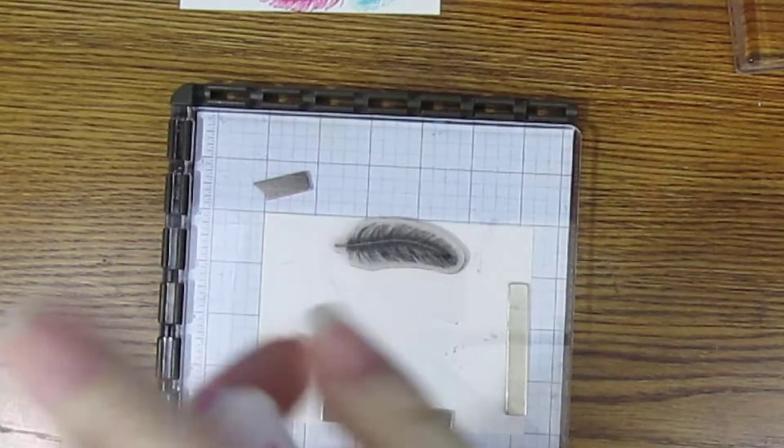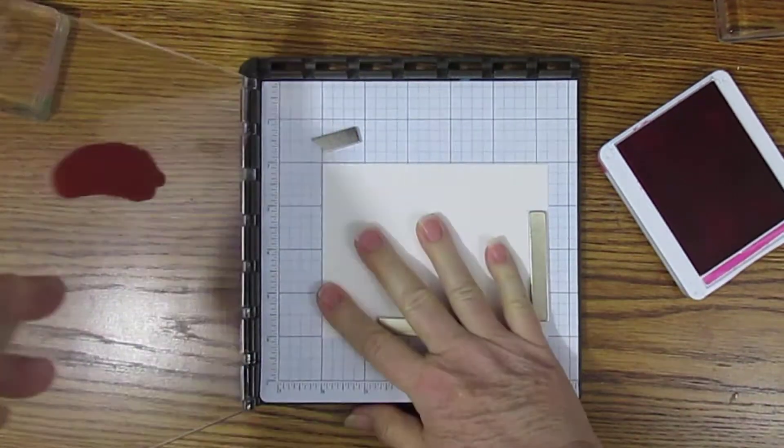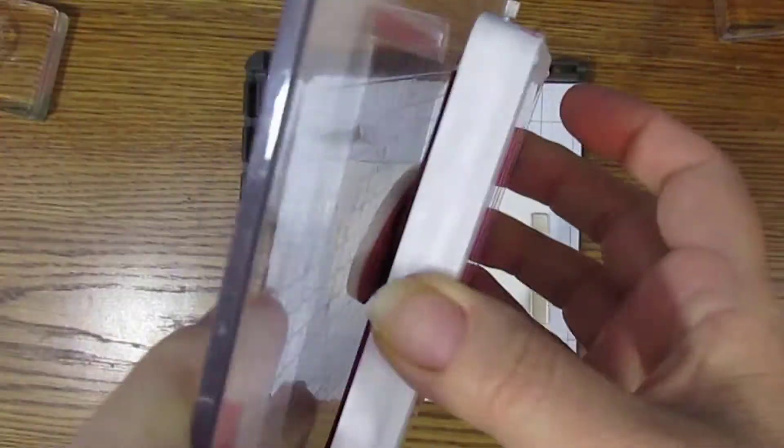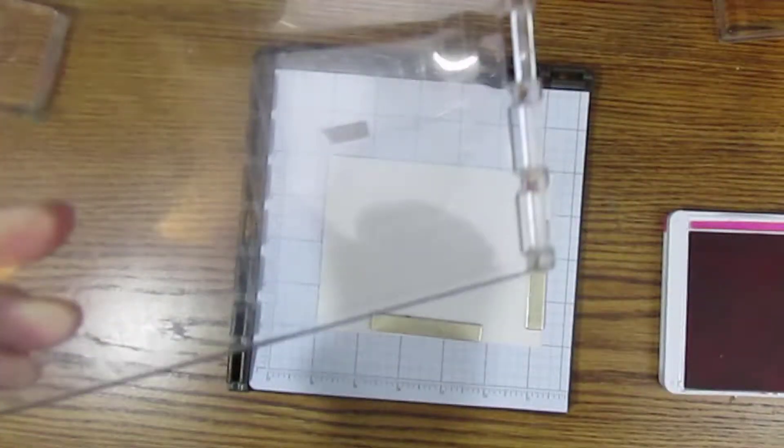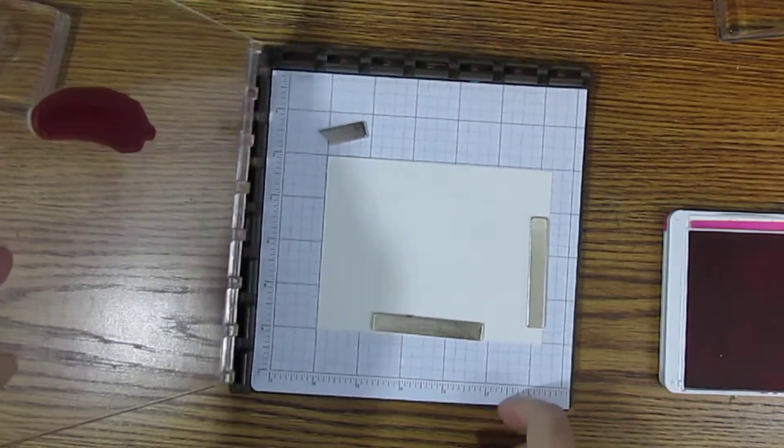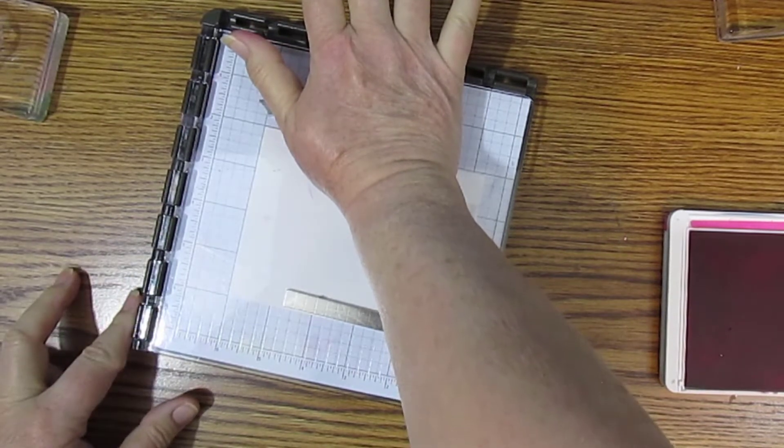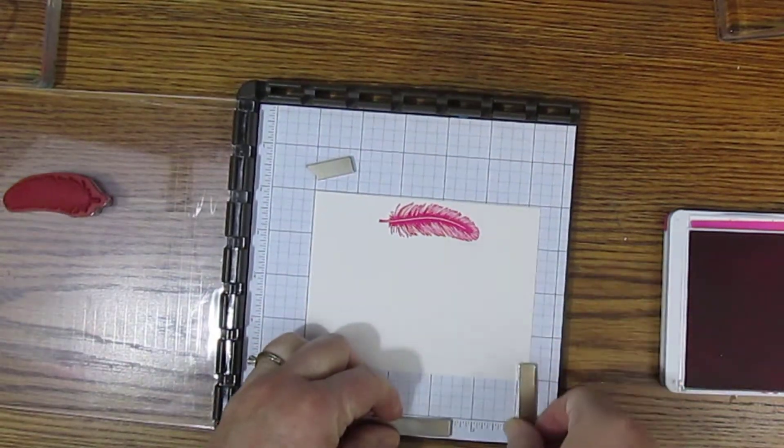We'll use Magenta Madness, which is one of the new in colors. I like to pull this all the way out. Just make sure you've gotten all the sides. If you get a little ink on your thing, just wipe it off with your Simply Chamois. All right, so we will stamp, and I like to just put my whole hand on it and get a perfect stamp.